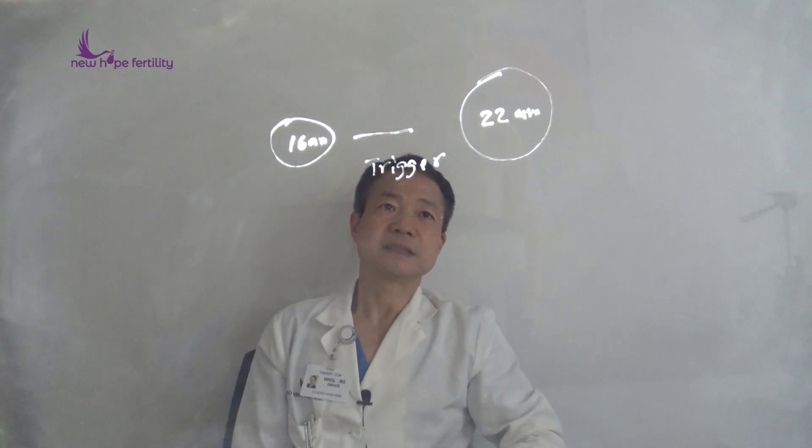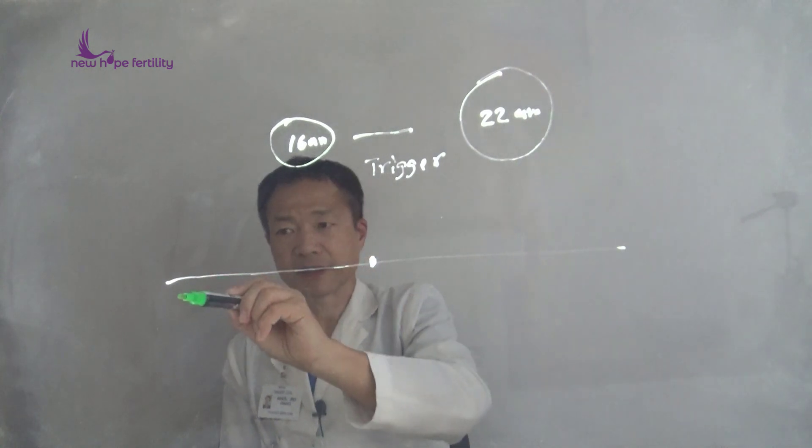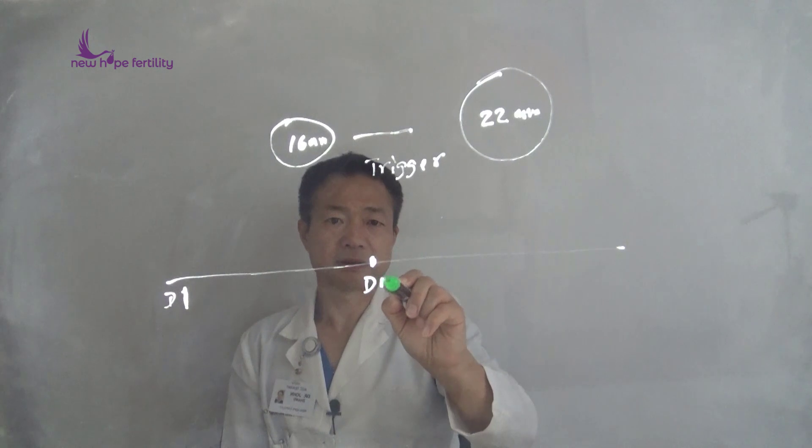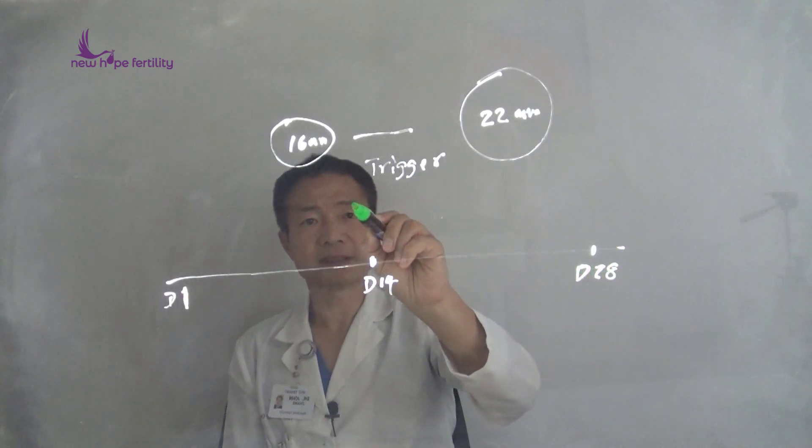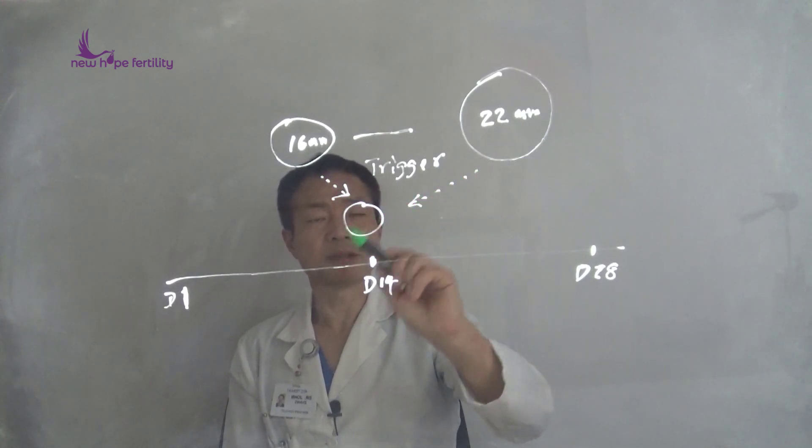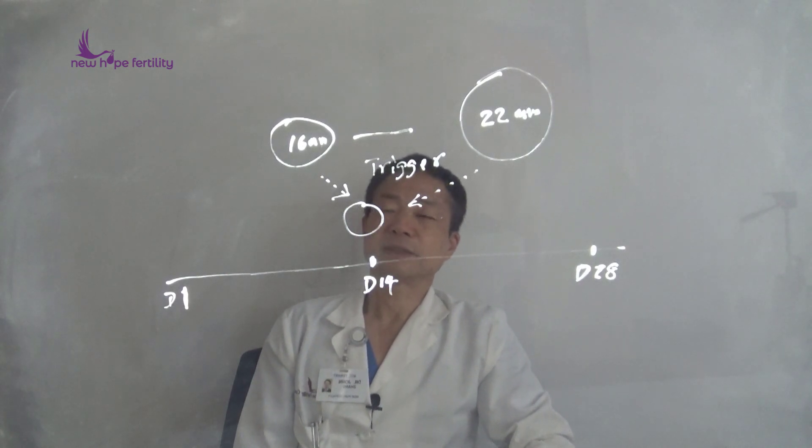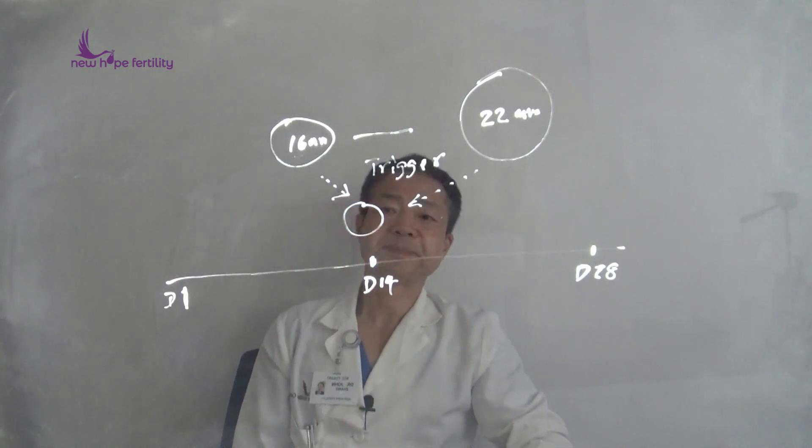However, this is not everything. In a normal natural cycle IVF from day one to day 14 to day 28, usually ovulating here in the follicle, most of the time in the natural cycle, the size of the follicle tends to be a little bit smaller before they ovulate as compared with the drug cycle when taking medicine.